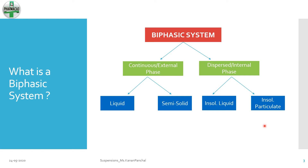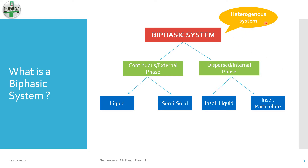In an emulsion, we have an insoluble liquid dispersed in a liquid. We shall study more about emulsions in another video. Whereas a suspension has insoluble solid particles dispersed in a continuous liquid medium. Remember that all biphasic systems are heterogeneous in nature.